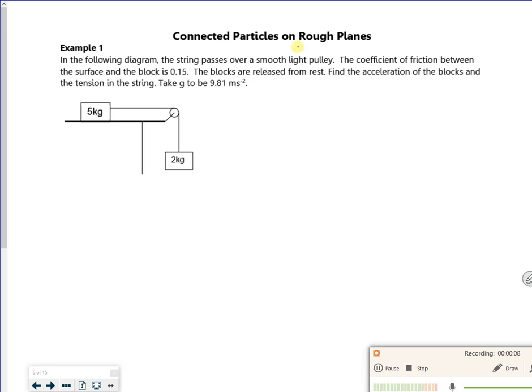So this time we've got friction, so remember our Fmax, which is μR, so we'll definitely need to resolve perpendicular to the plane. So it says, in the diagram the string passes over a smooth pulley, the coefficient of friction between the surface and the block is 0.15. So μ is 0.15. The blocks are released from rest, find the acceleration of the blocks and the tension in the string.